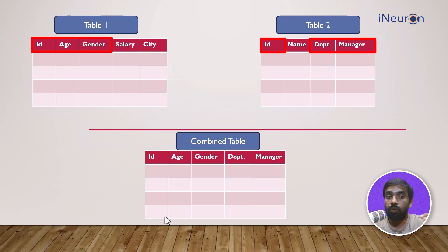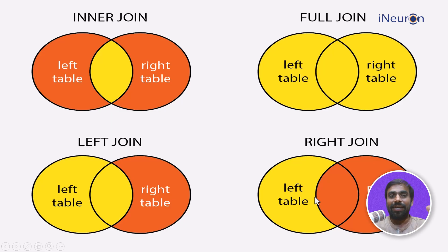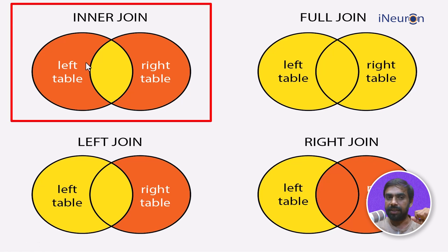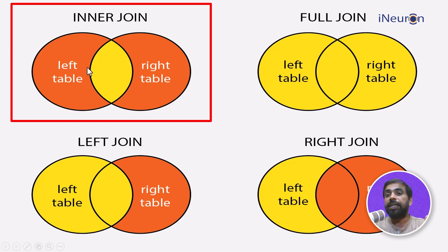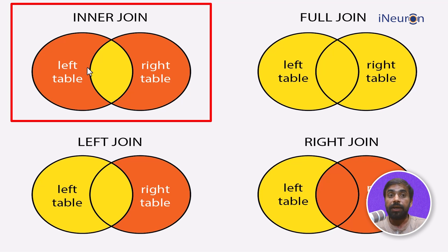Let's look at inner join first. Inner join gives you only the common data — that is, the data which is present in both the left table and the right table. Any data which is present in both tables will be reflected by inner join once we execute this particular join.